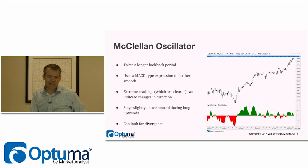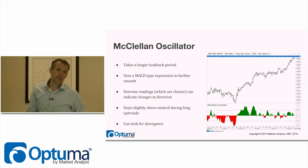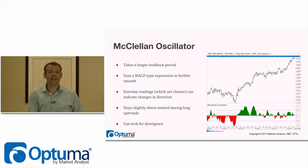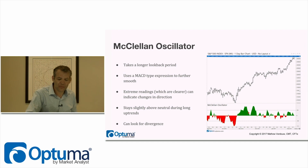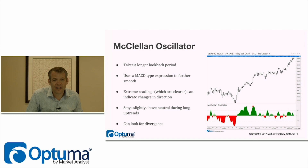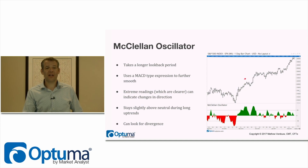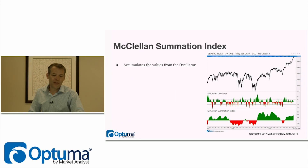Extreme readings on the McClellan Oscillator function like overbought/oversold — when you get extreme peaks, it's basically telling you there are so many stocks supporting the trend that it may roll over because that's unsustainable. You can also use it for divergences. Looking at two peaks on the oscillator and translating that up to price — if the oscillator makes a lower peak while price makes a higher peak, that's negative divergence, or at least not bullish confirmation.